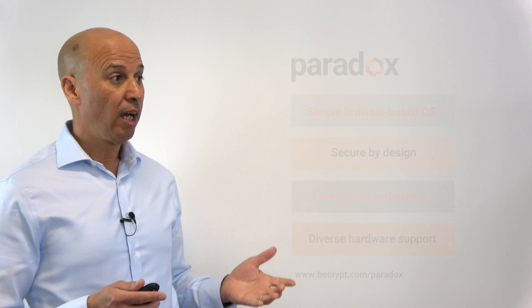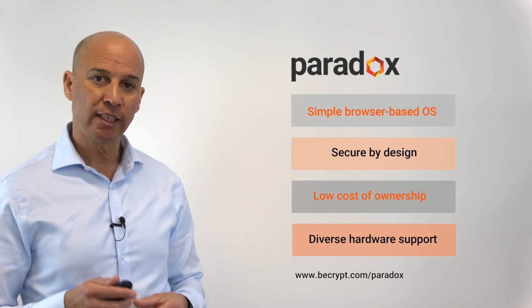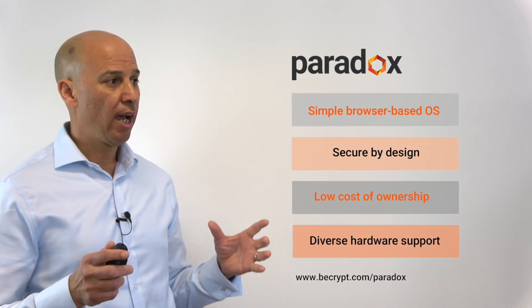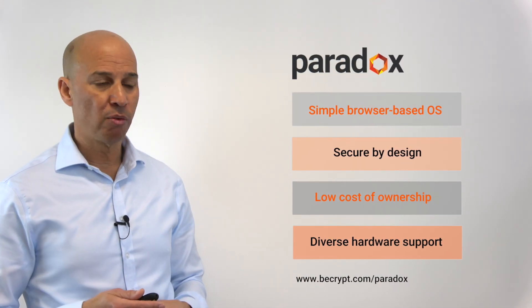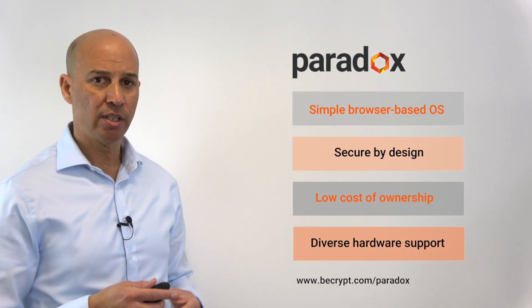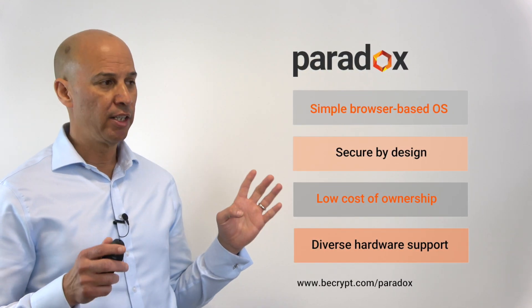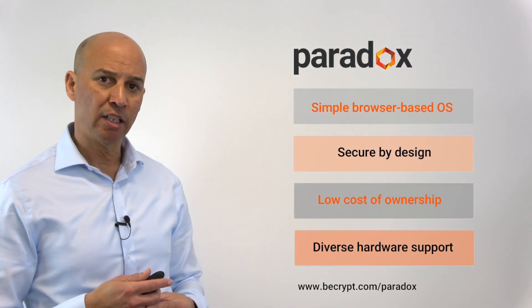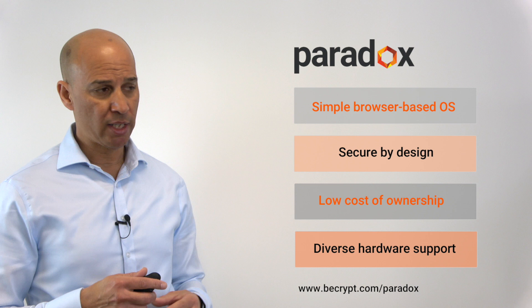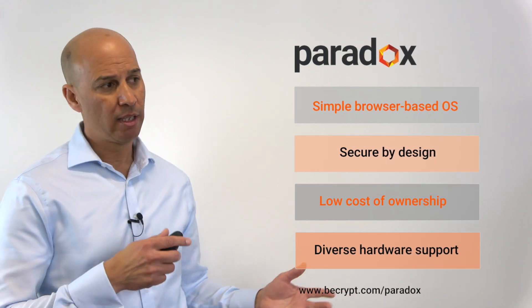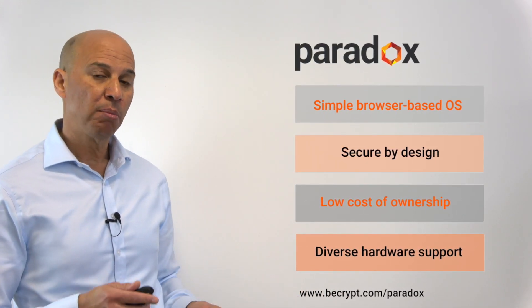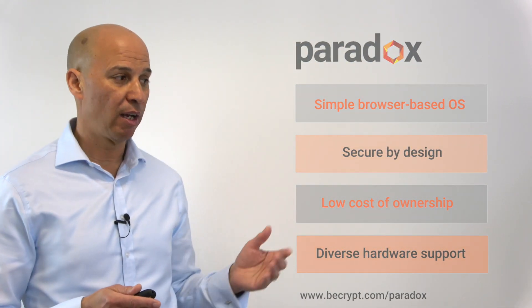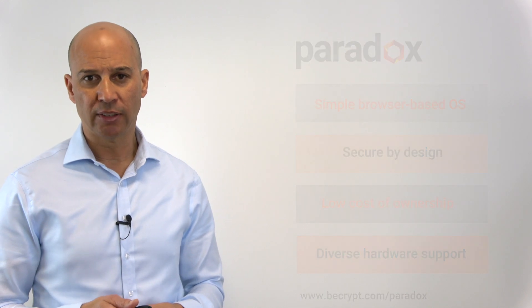In summary, Paradox is a simple browser-based operating system for accessing online services. It's secure by design, having been developed in collaboration with UK government, with that intrinsic security architecture. Importantly, it ensures that the cost of ownership is low and supports a diverse array of hardware — be that standard desktops, thin clients, or kiosks. If you want to find out more, please check out our website or get in touch with us directly and we'd love to give you more details. Thank you.